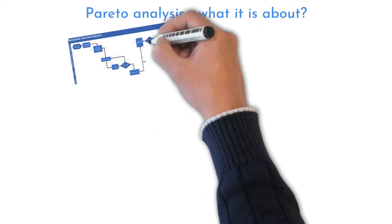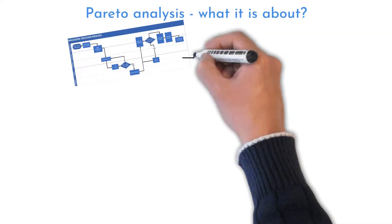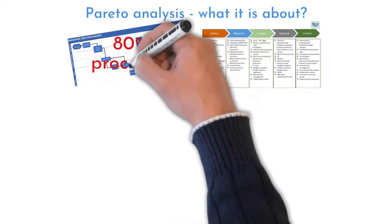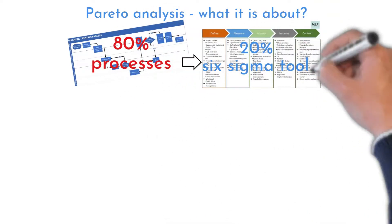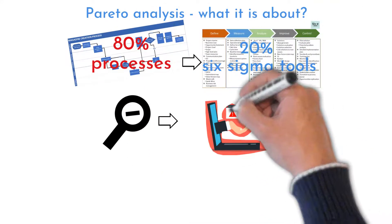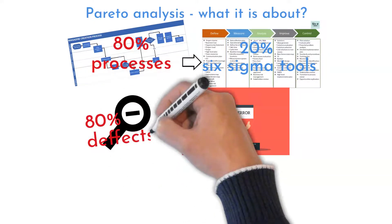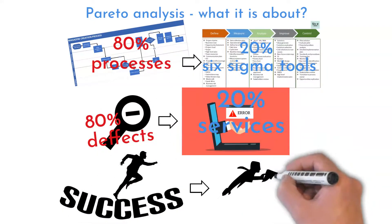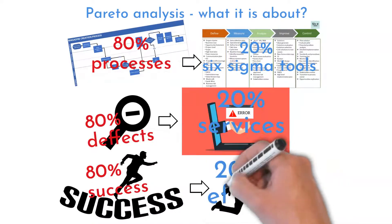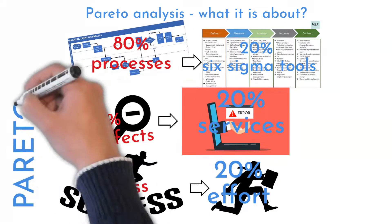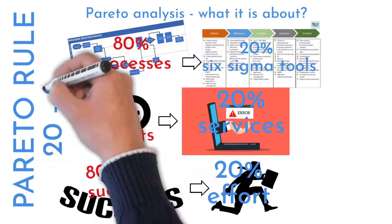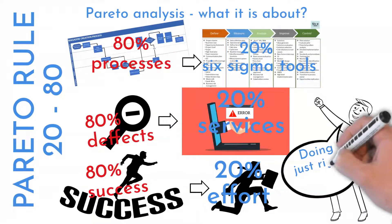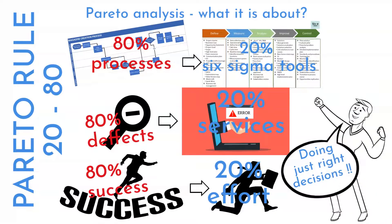Welcome to Six Sigma Mania. You are able to improve 80% of processes by using 20% of tools from the Six Sigma toolbox. 80% of discrepancies are created by 20% of services, and 80% of your success comes from 20% of your efforts. The Pareto rule is a great helper in decision making — it focuses on the most important things and reduces stress.